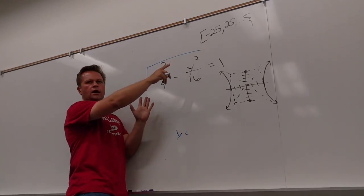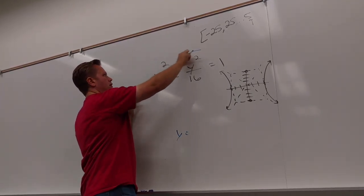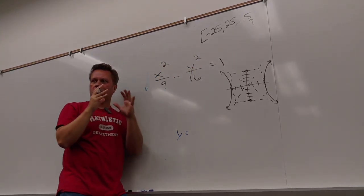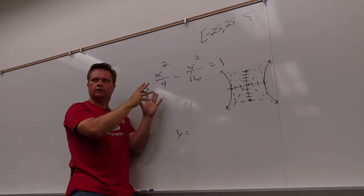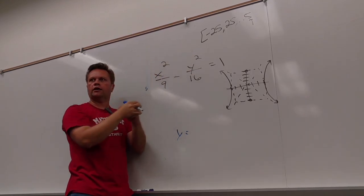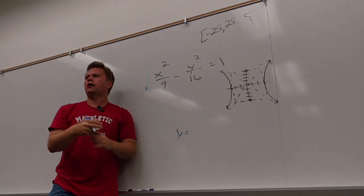Trying to get this to be y equals something. Why is this step not a good step? The original problem, where's my y? It's here, right? But it's relatively free. I can multiply by 16 eventually. I can move the x squared over 9 eventually. But the minute I do this, now it's stuck inside a square root. Why would I do that to myself?